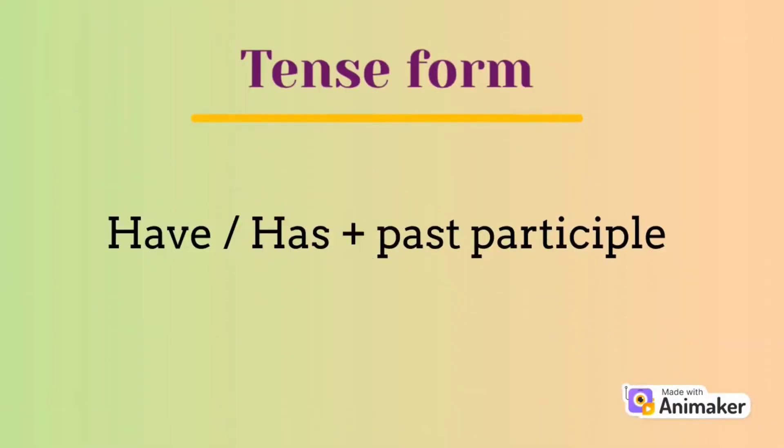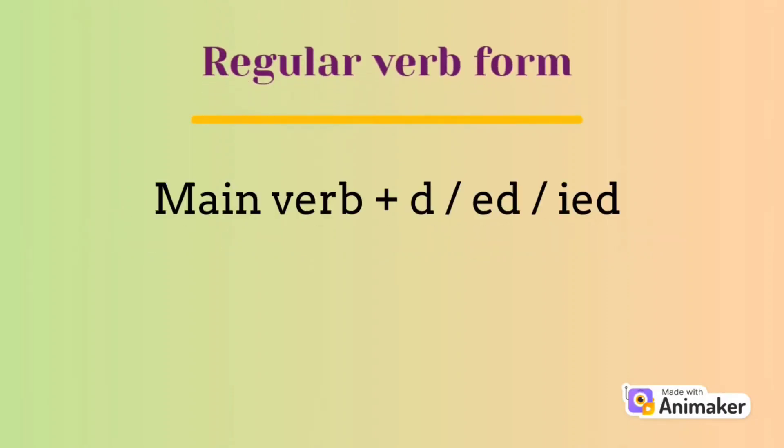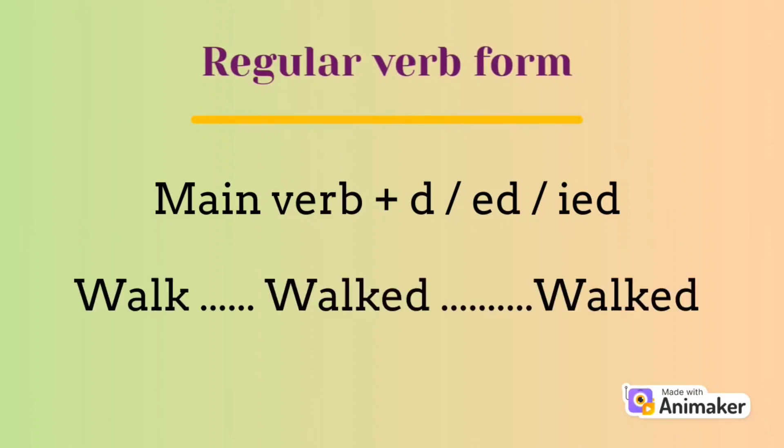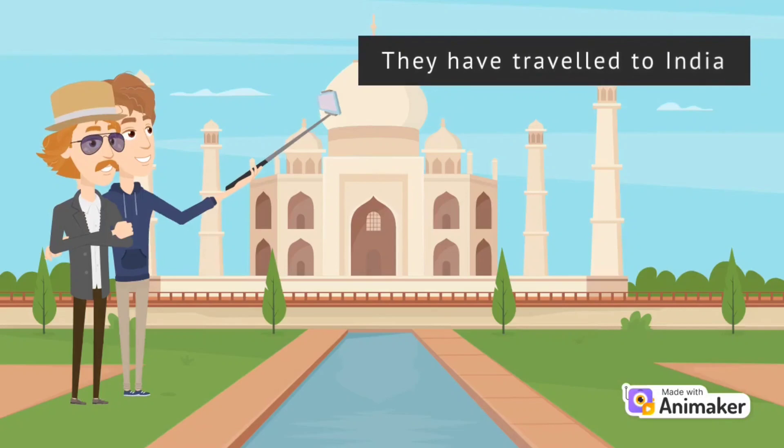Tense form: we use in present perfect verb to have plus past participle. For a regular verb in present perfect, we add d, ed, or ied to the main verb. For example: walk, walked, walked. They have traveled to India.